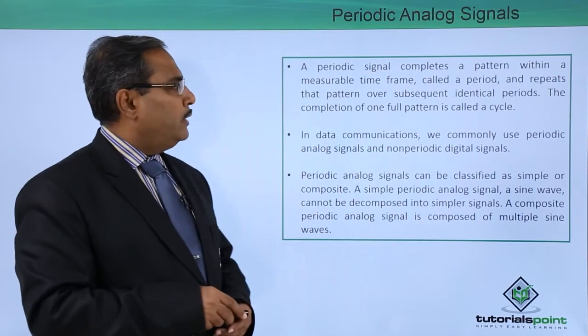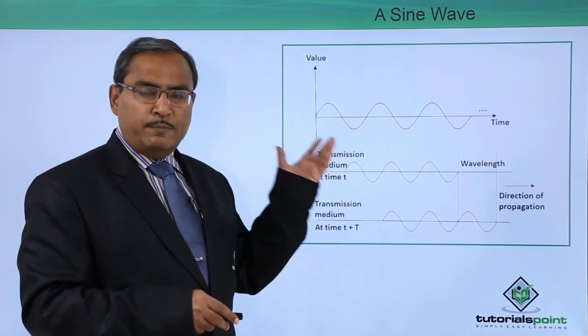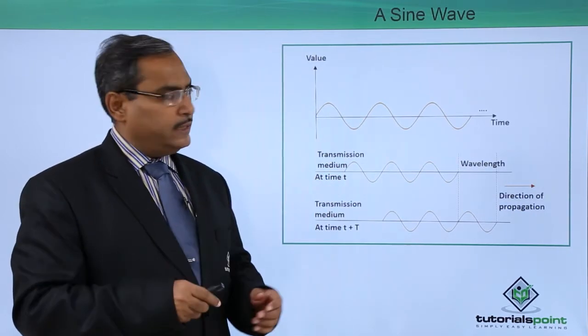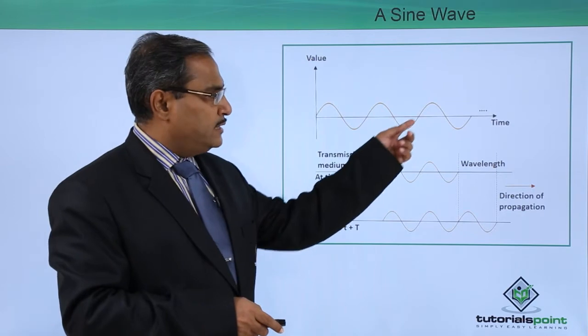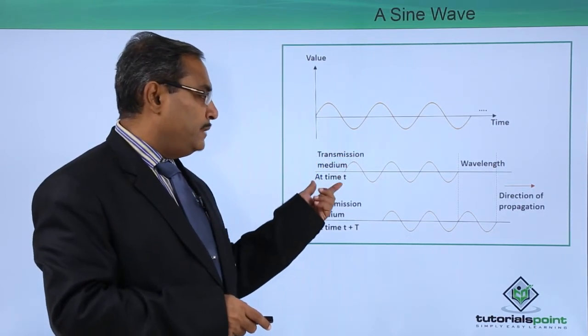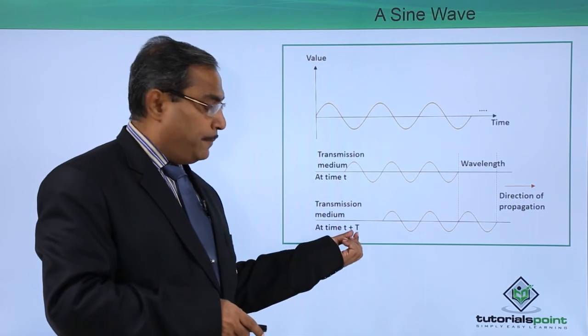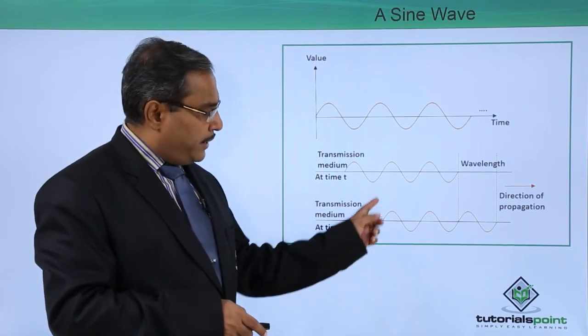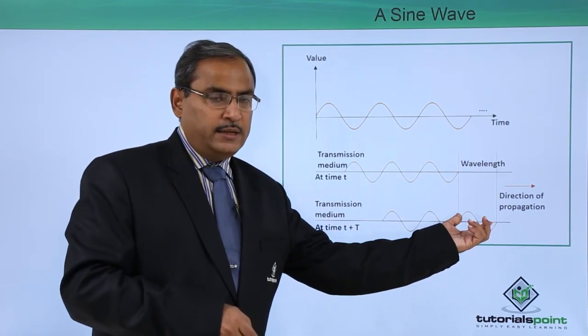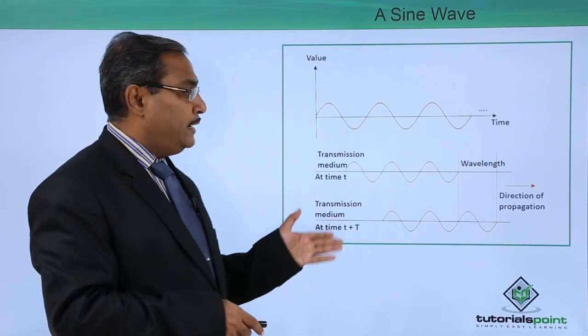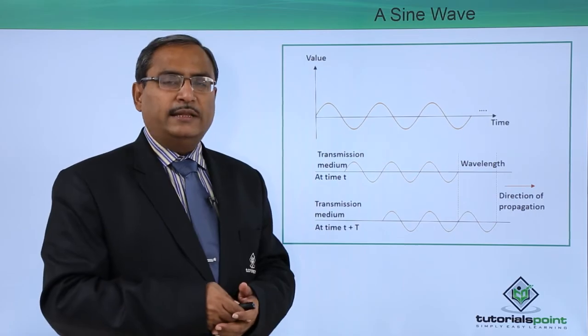Let us look at a diagram for understanding. Here you can find one sinusoidal waveform or sine wave. This is a sine wave in a transmission medium. At time t it has started from here, and in this way it is transmitting at time t plus T. This capital T is actually denoting the time period. In this way we have explained how an analog signal in the form of a sine wave can be transmitted. Thanks for watching this video.